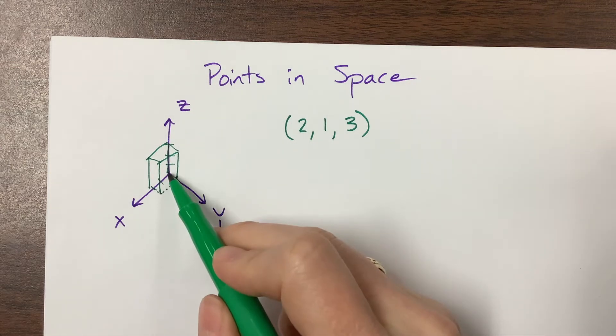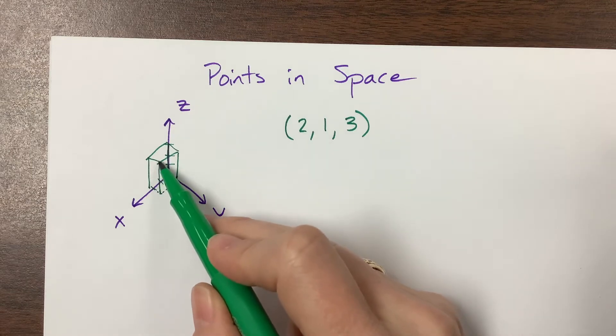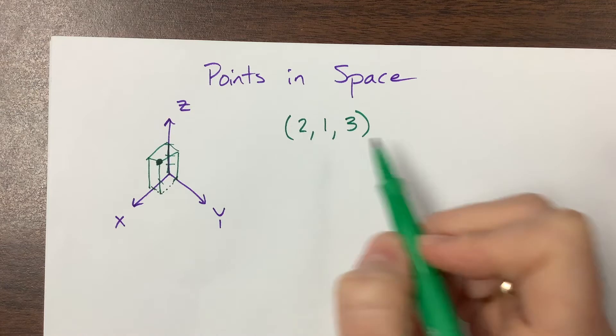And here's my attempt at drawing that rectangular prism. So what we've done here is we've gone 1, 2 units in the x direction, 1 unit in the y, and then up 1, 2, 3 in the z. And so this point right here is the point (2, 1, 3).